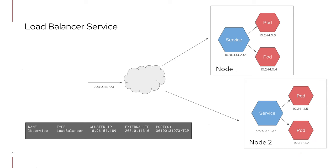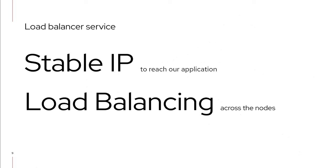The second thing the cloud provider gives us is the load balancing part. Somebody tries to access your virtual IP from outside, and the cloud provider's network infrastructure does the multiplexing of that traffic across all the nodes of the cluster. Once the traffic reaches a node, all the rest is handled by the cluster's CNI — the role of the load balancer ends there. So a service of type load balancer gives us a stable IP to reach our application from outside, and load balancing across the different nodes.